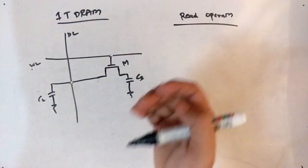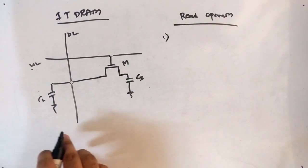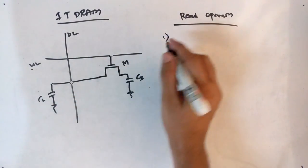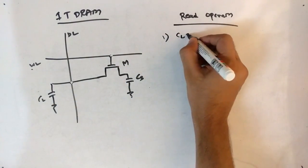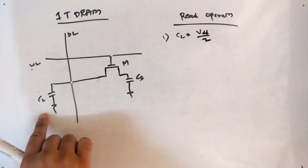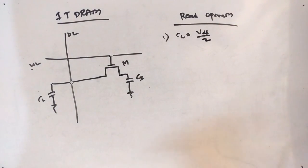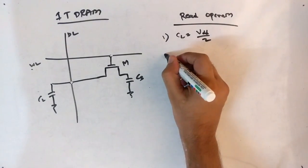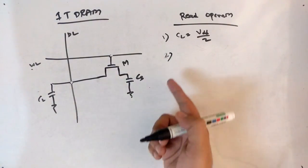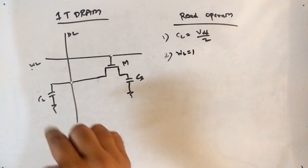Now let's see the working. The first point is the read operation. In the read operation, the data line capacitor CL is pre-charged to VDD/2. We will understand why VDD/2 in the further steps.